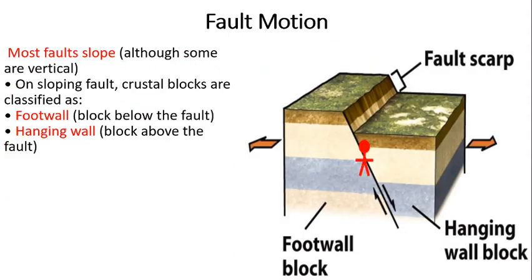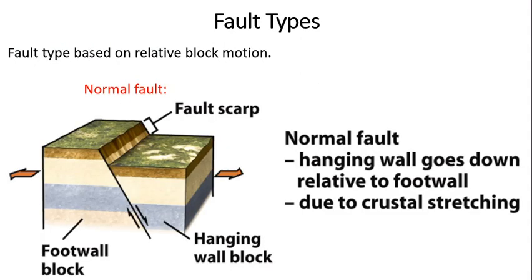Next comes fault motion types. When a fault moves, there will be a fault scar, a foot wall block, and a hanging block. The movement of the foot wall block and hanging block decides the type of fault motion. In a normal fault, the foot wall block stands still, there is a fault scar, and the hanging block slides downwards.